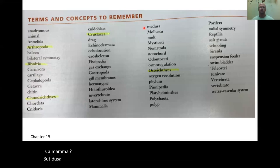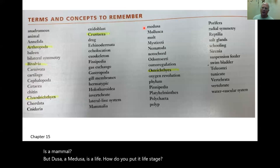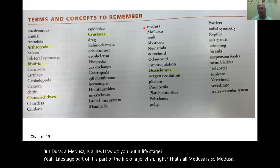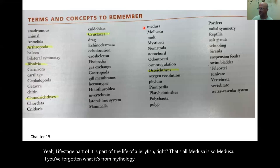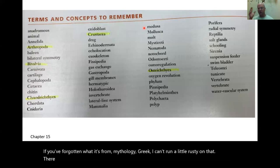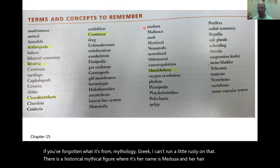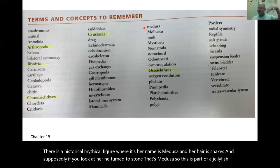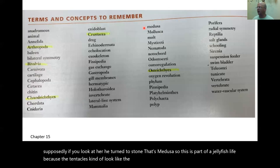Medusa is a life stage — it's part of the life of a jellyfish. From Greek mythology, Medusa is a figure whose hair is snakes, and supposedly if you look at her, you turn to stone. This is part of a jellyfish life stage because the tentacles kind of look like snakes — that's kind of where it came from.